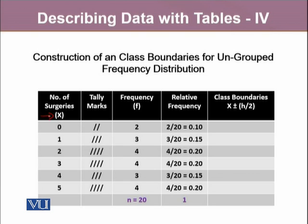We constructed the relative frequencies out of it. To construct the class boundaries, we will identify what's h. h is the gap between these values, and here it is 1 for each. For the class boundaries, h by 2 in this case is 1 by 2, which is 0.5. We will subtract 0.5 from each value in each class, and then add as well.